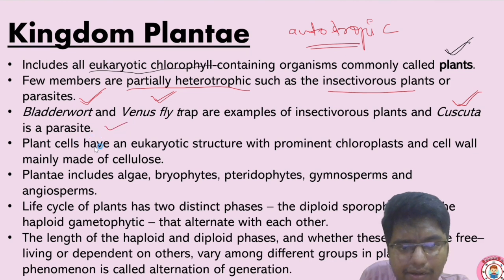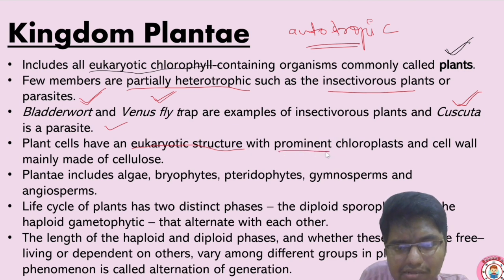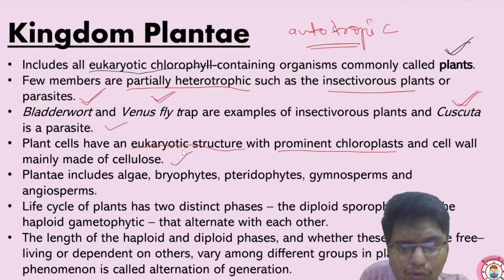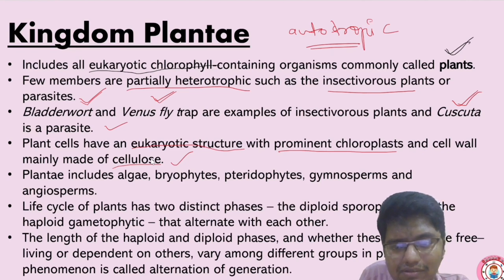Plant cells have a eukaryotic structure with prominent chloroplast. The cell wall is mainly made of cellulose — cellulose is basically a sugar, a carbohydrate.